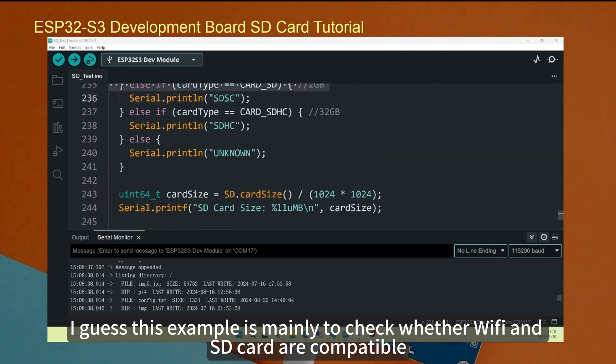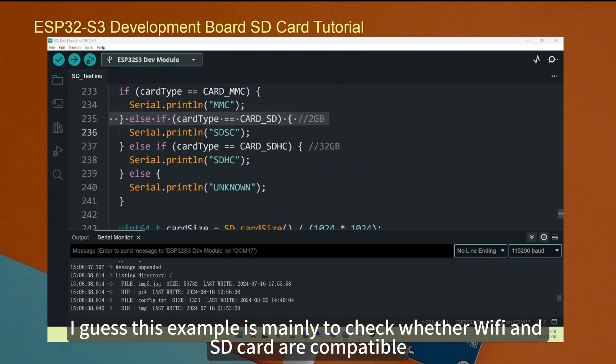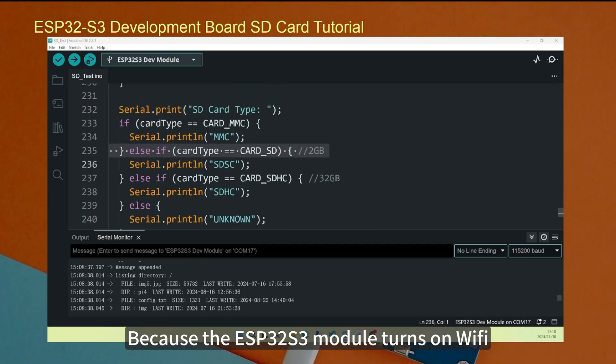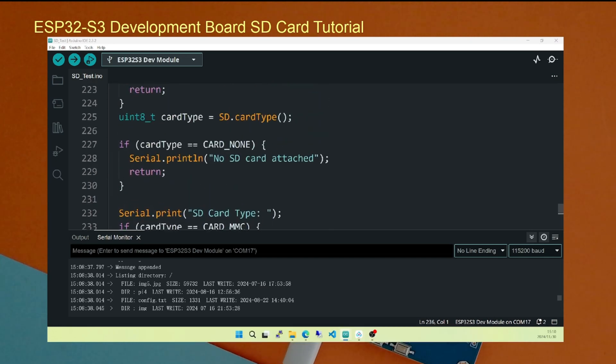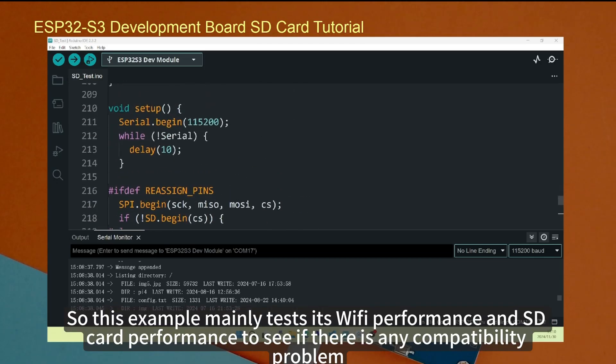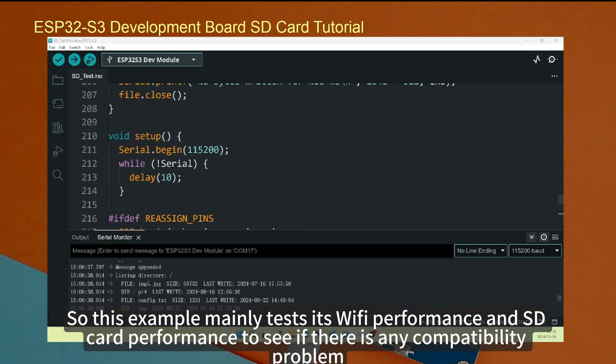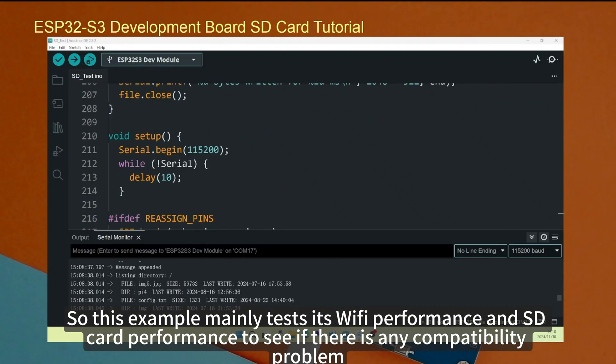I guess this example is mainly to check whether Wi-Fi and SD card are compatible. Because the ESP32-S3 module turns on Wi-Fi, maybe its performance will be slightly reduced. Because Wi-Fi takes up more resources. So this example mainly tests its Wi-Fi performance and SD card performance to see if there is any compatibility problem.